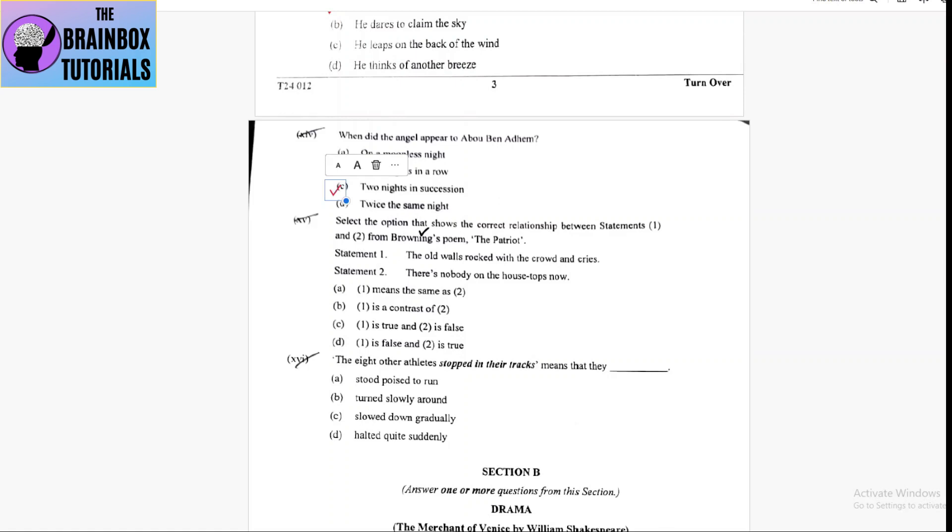Next one, select the option that shows the correct relationship between statements one and two from Browning's poem, The Patriot. Statement one is the old walls rocked with the crowd and cries. And statement two, there is nobody on the house tops now. So, option number A, one means the same as two. No.